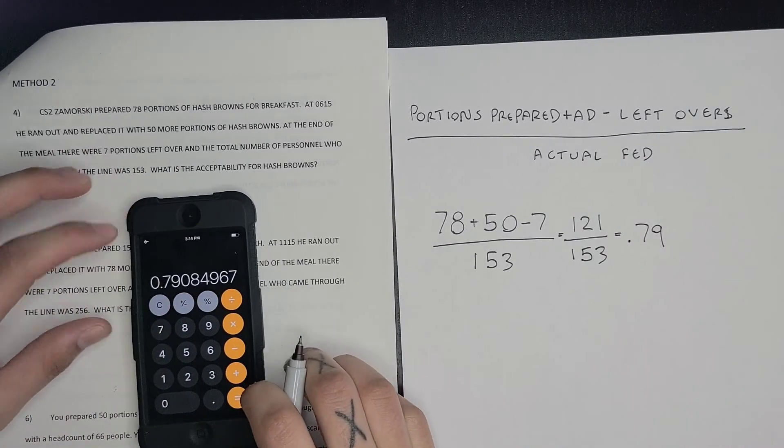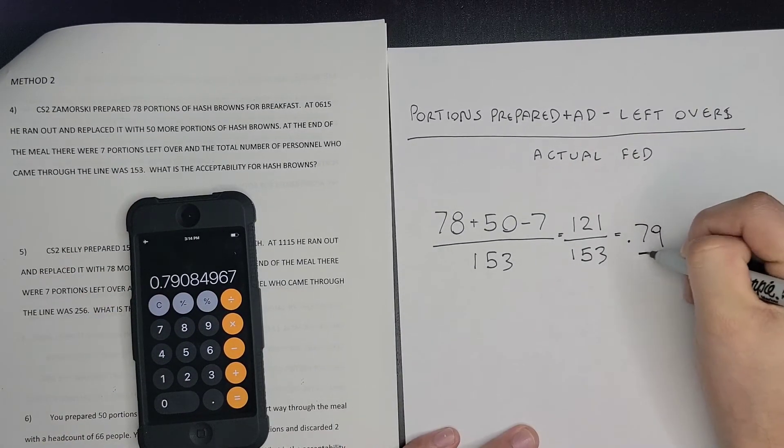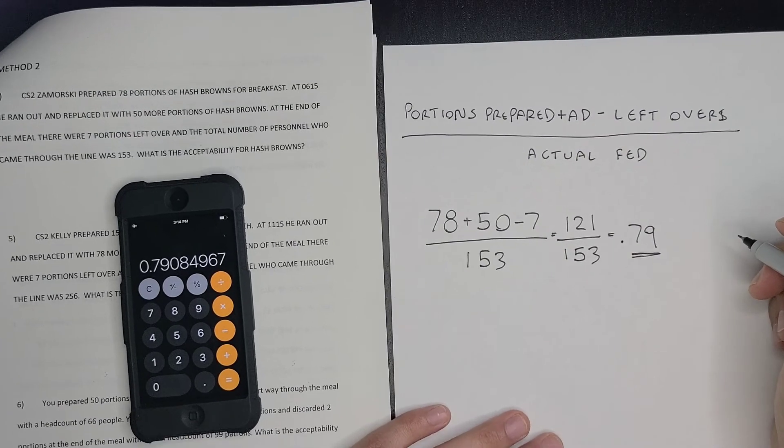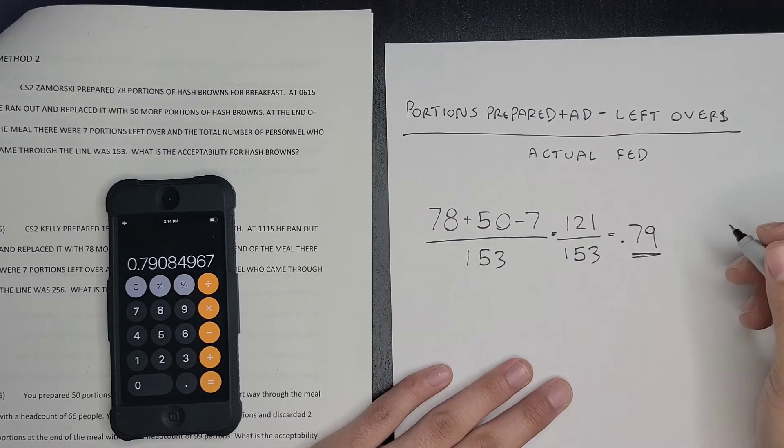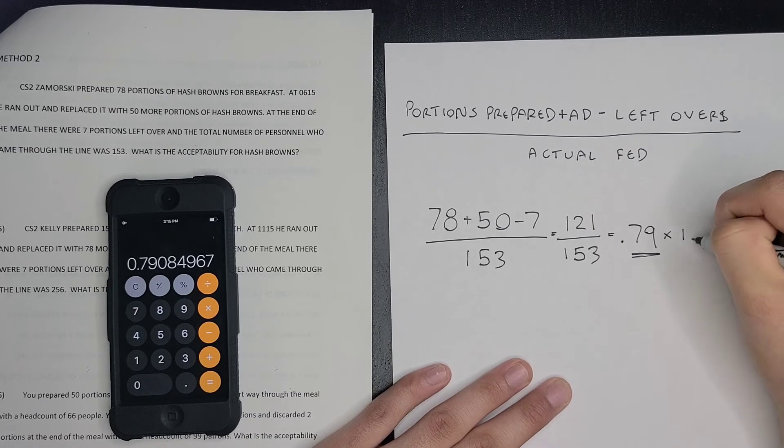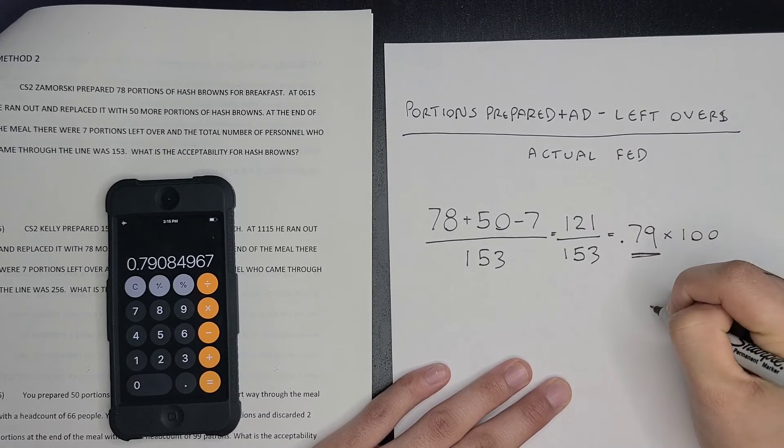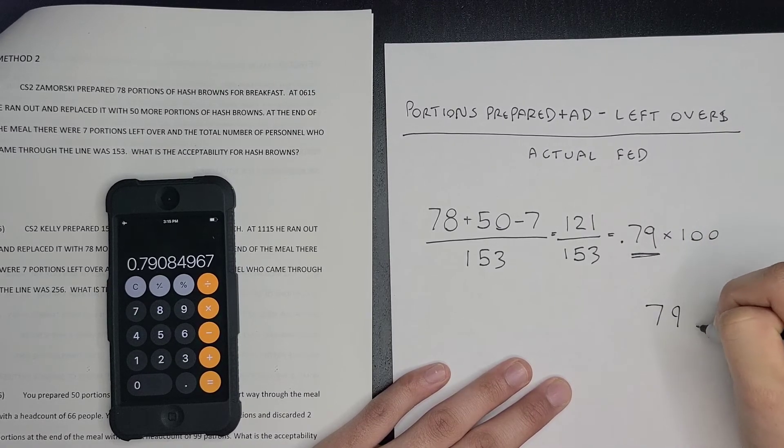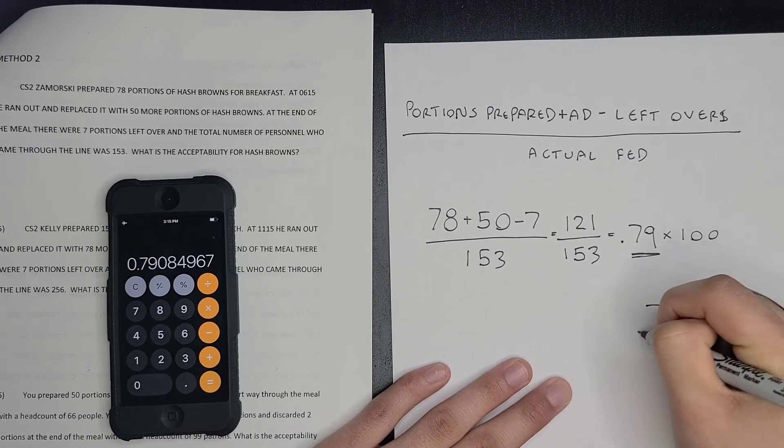So that equals 0.79. So we're always going to do it to the hundredths place, which is just these two numbers. So since acceptability is always going to percentage, you're just going to multiply this decimal by 100 and you're going to get 79%. So that is your answer.